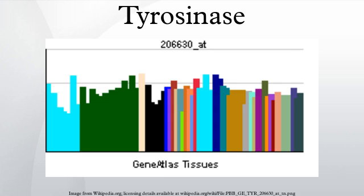Tyrosinase is a copper-containing enzyme present in plant and animal tissues that catalyzes the production of melanin and other pigments from tyrosine by oxidation, as in the blackening of a peeled or sliced potato exposed to air.